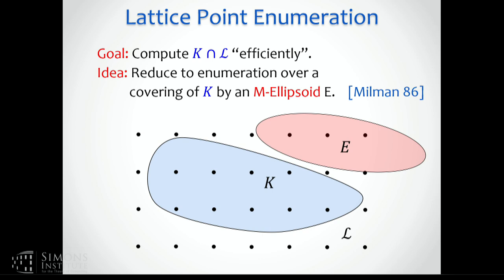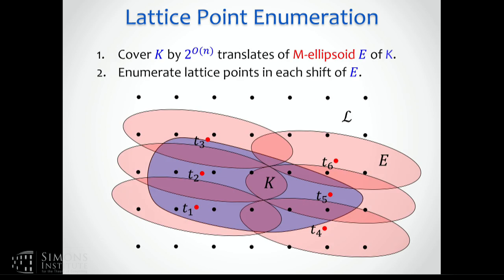Once you know that, after some work, you try to cover the body with shifts of the ellipsoid, then enumerate all the points inside all of the ellipsoids. Because of the shapes being not too far off, this number of points ends up not much bigger than the number of points you can get in k in any translation — because you're just going to cover this with copies of k. That's where you get the bound from.